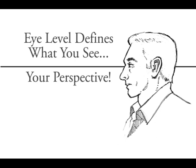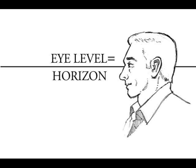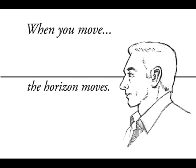Your eye level is also called the horizon. When you move your eyes, the horizon moves. The horizon is wherever you're looking.